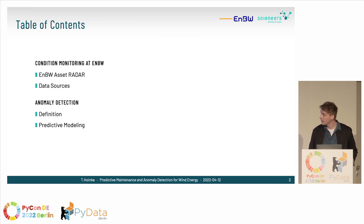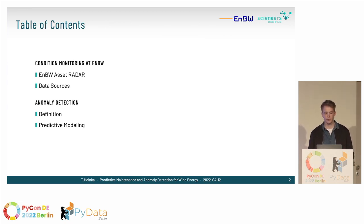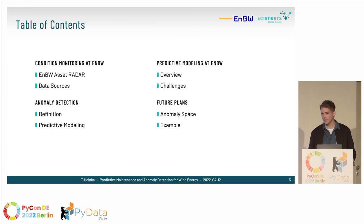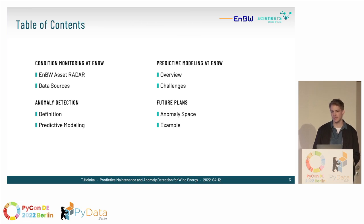Here's a table of contents. First, I'll talk about condition monitoring at EMBW and an application called EMBW Asset Radar, which is proprietary software developed in-house. I'll cover data sources, what data we have about our wind turbines. Then anomaly detection in a general sense — what it is and why it's difficult. Then predictive modeling: the idea behind it, the challenges, how we use it at EMBW, future plans around a concept we coined as anomaly space, and a helpful example at the end.